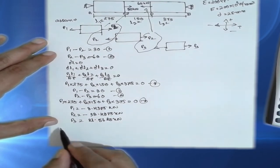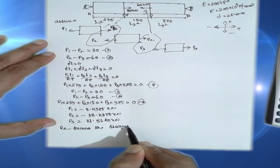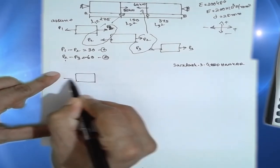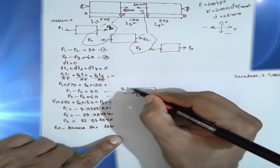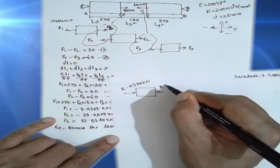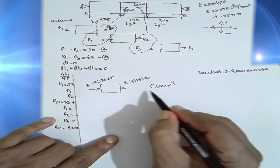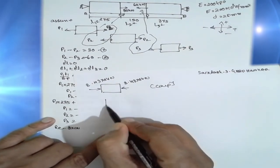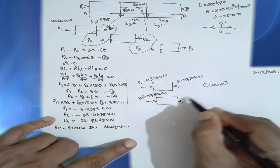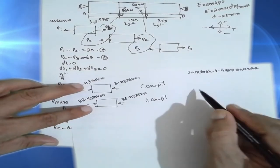Redrawing the diagram: the first portion is compressive at 8.4375 kN (shortening occurs), the second portion is also compressive at 38.4375 kN, and the third portion is tensile at 21.5625 kN.